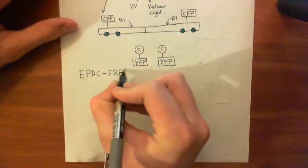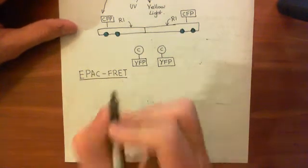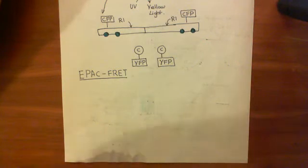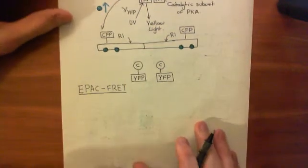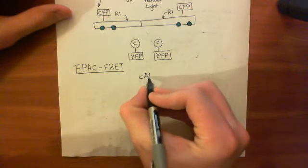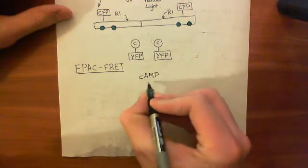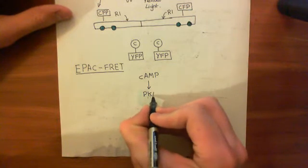So EPAC - firstly, we need to discuss what EPAC is before we can discuss what EPAC-FRET is. EPAC is another cytosolic target for cyclic AMP. Basically, cyclic AMP has three main targets in cells. So let's just draw this little diagram. What can cyclic AMP activate? Well, one of them is that it can activate protein kinase A, and that's its main one.